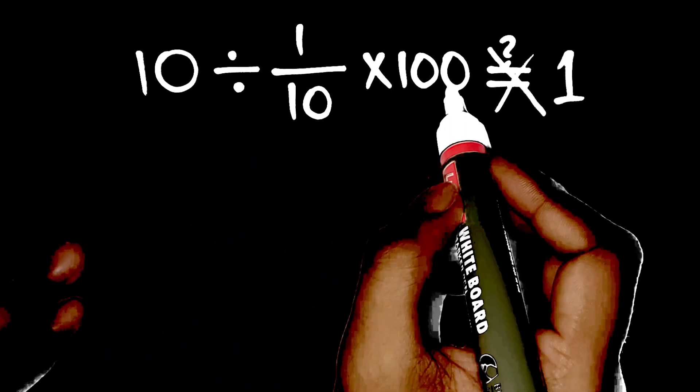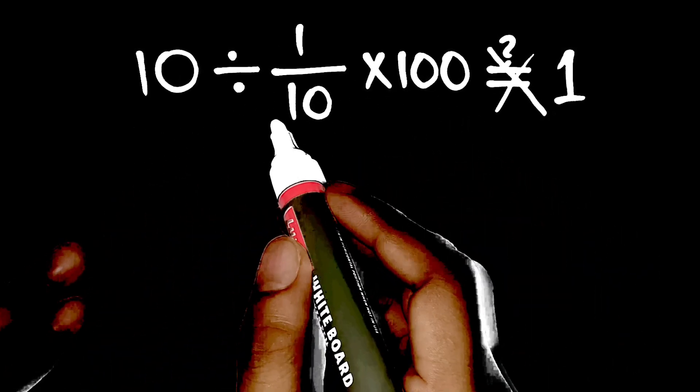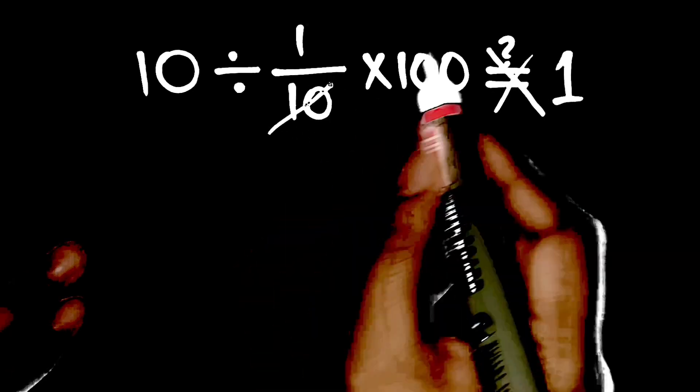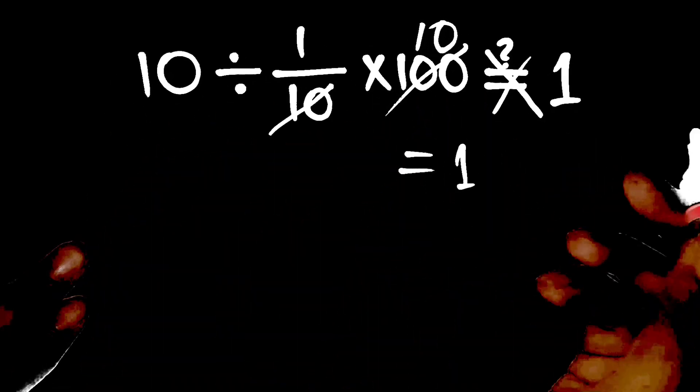10 divided by 1 tenth times 100. Most people immediately think, okay, 1 tenth times 100 is 10, then 10 divided by 10 is 1. Easy, right?